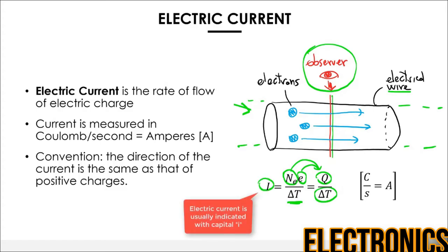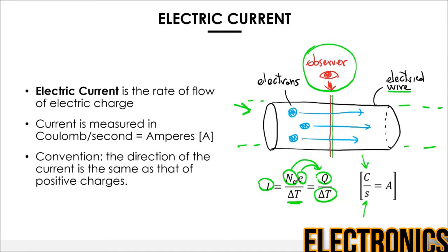Electric current is the amount of charge that passes during a certain time. The natural unit of measurement would be Coulombs divided by seconds, because we have charge divided by time. But because current is such an important quantity, it has its own unit of measurement called the Ampere, indicated with A. So we substitute Coulombs per second with A.